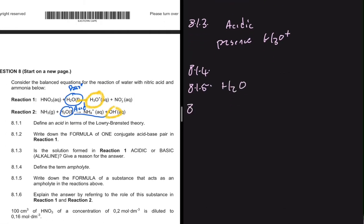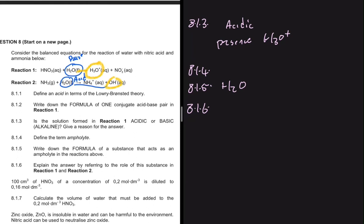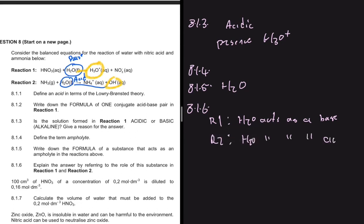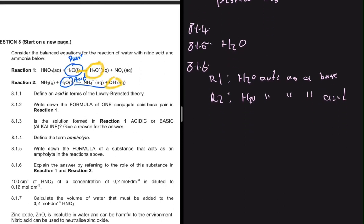8.1.6 says explain the answer by referring to the role of this substance in reaction one and reaction two. In reaction one, H2O acts as a base. In reaction two, H2O acts as an acid. That's 8.1.6.